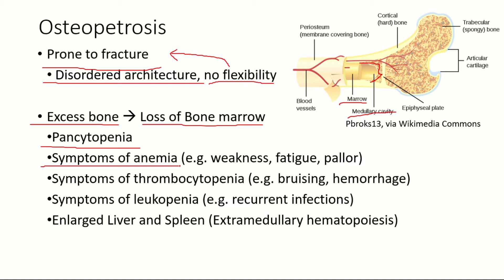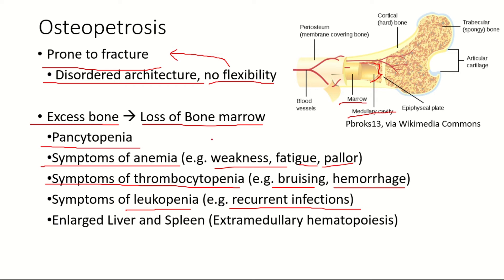Decreased production of red blood cells causes symptoms of anemia such as weakness, fatigue, and pallor. Defective platelet production causes thrombocytopenia with bruising and hemorrhage. Defective leukocyte production leads to recurrent infections. Since the hematopoietic activity of bone marrow is lost, it is taken over by other organs such as the liver and spleen — known as extramedullary hematopoiesis — leading to hepatosplenomegaly.